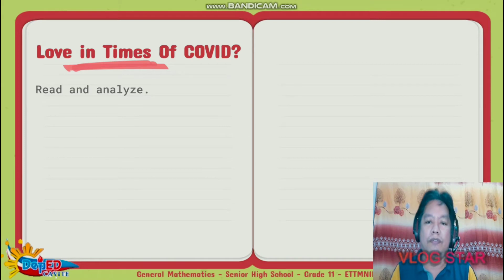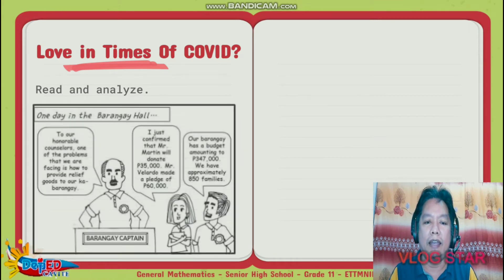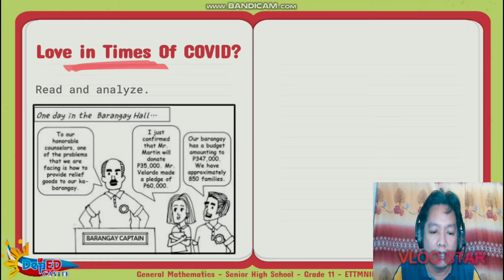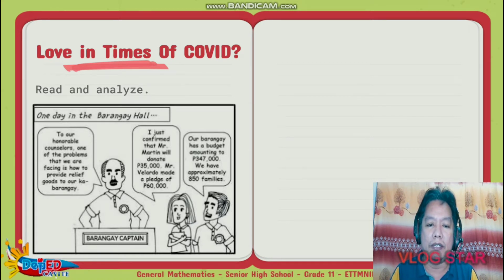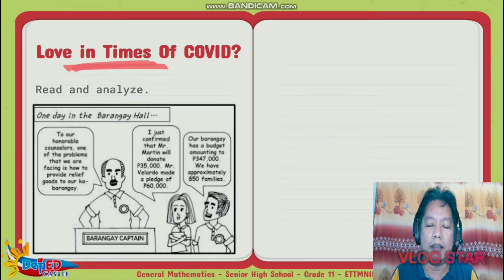Love in Times of COVID. Read and analyze this story. The barangay captain says to the honourable councillors: one of the problems we are facing is how to provide relief goods to our kabarangays. I confirmed that Mr. Martin will donate 35,000 pesos, Mr. Vilardo made a pledge of 60,000 pesos, our barangay has a budget of 347,000, and we have approximately 850 families.